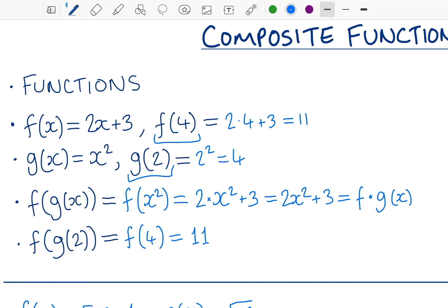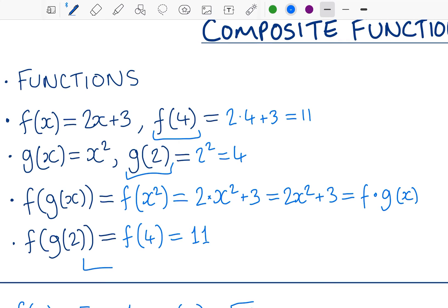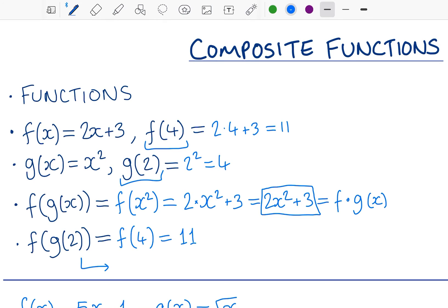So another way of doing that is if I already know the final form of the function f of g of x, and I do, that means I can plug two into that final function. I can do two x squared plus three and plug two into that. That's eight plus three, and that's obviously also 11. So two ways of evaluating a composite function.